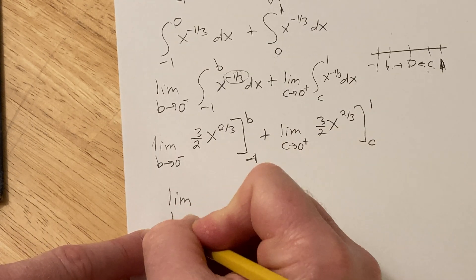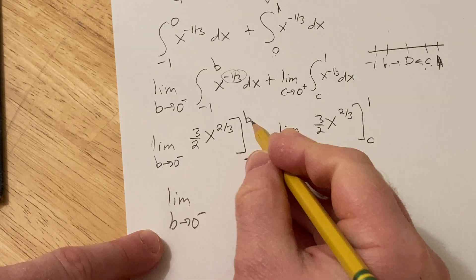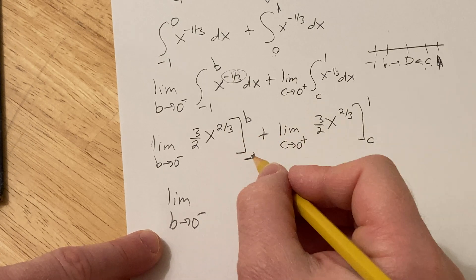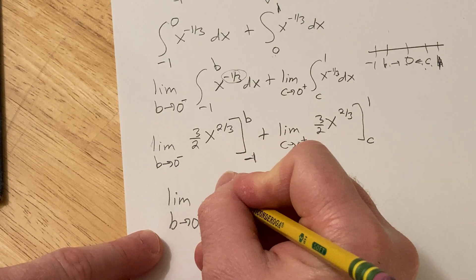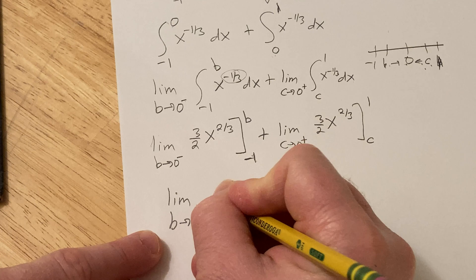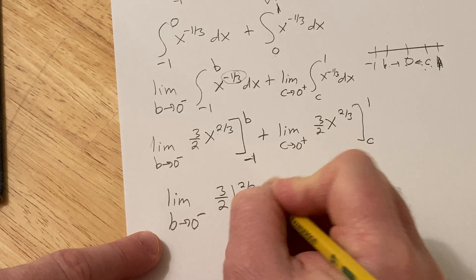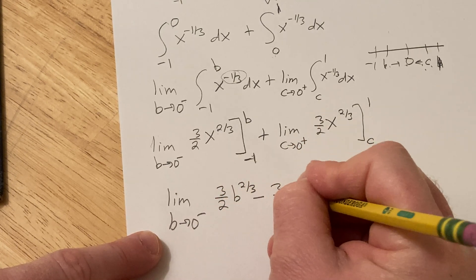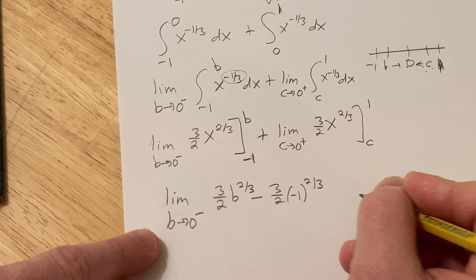This is the limit as b approaches zero from the left. First you plug in b, then subtract and plug in negative one. So it's three-halves b to the two-thirds minus three-halves times negative one to the two-thirds.